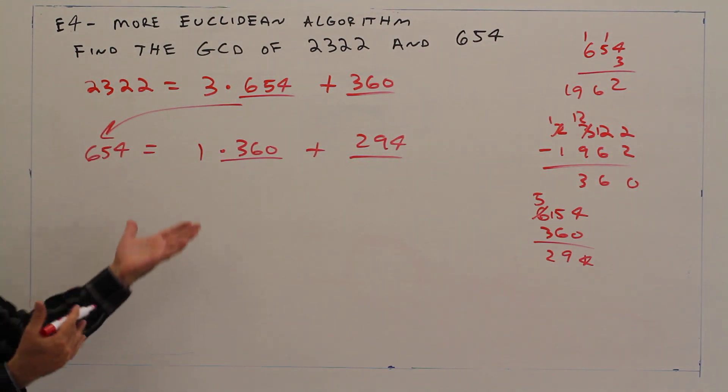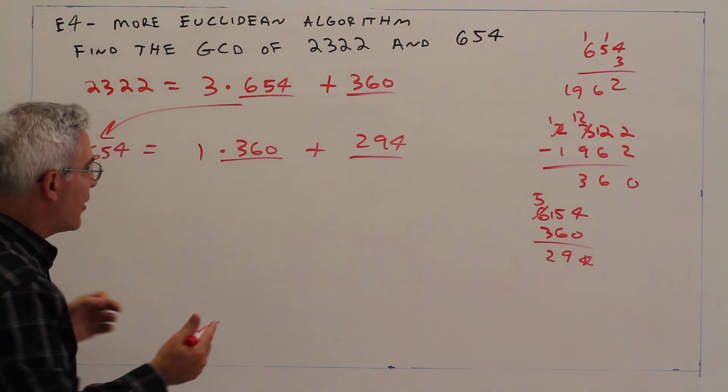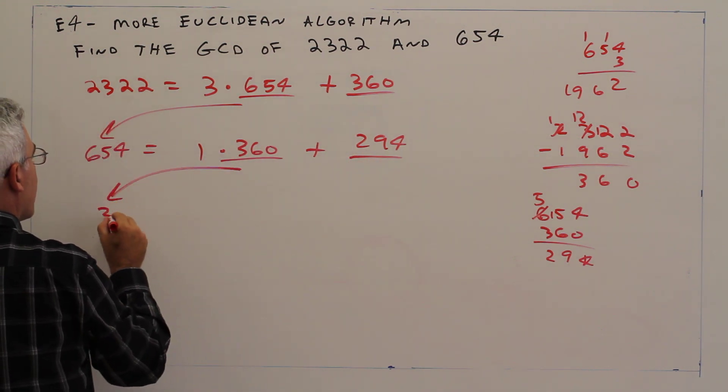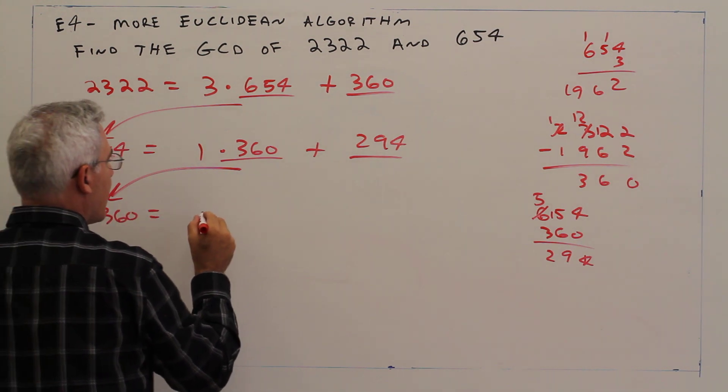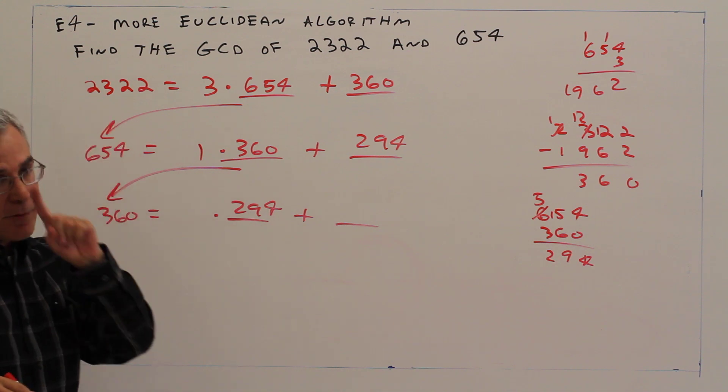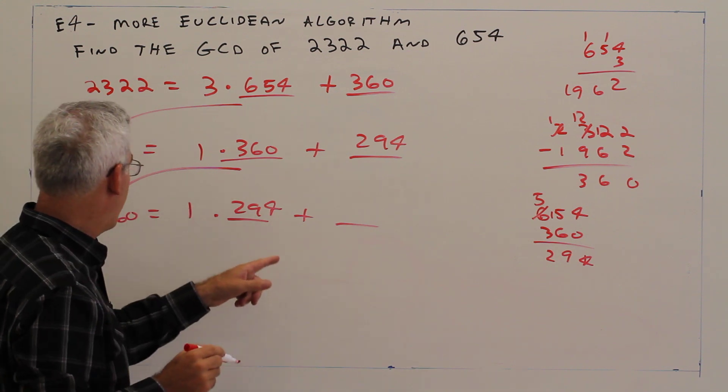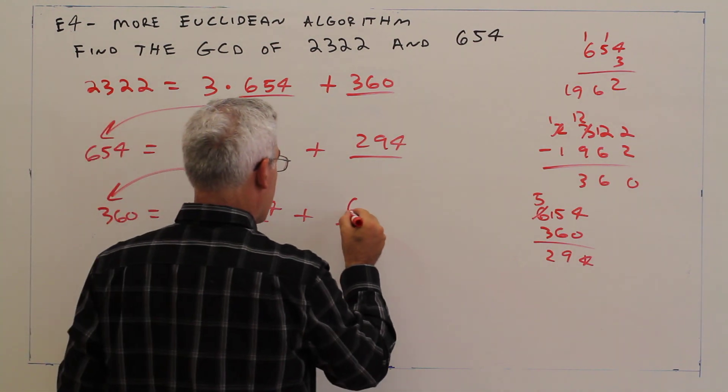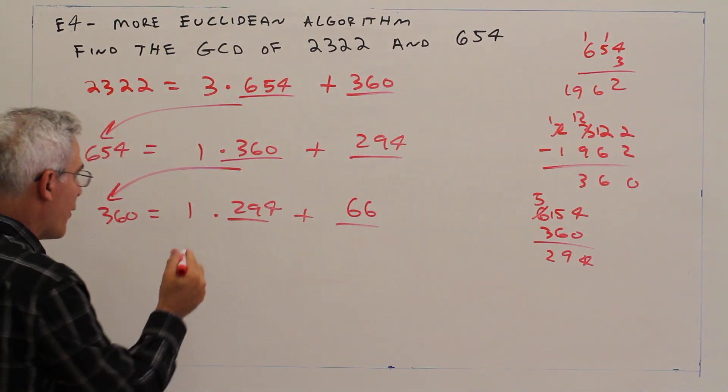Okay, so basically all I did is I did one subtraction there. That's my difference, my remainder more or less. 360 equals how many 294s? Just one. Let's find the remainder. Do that in my head. Add six. So 66. Bring those over.